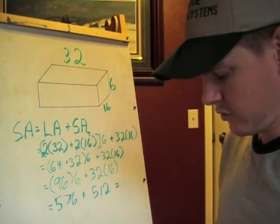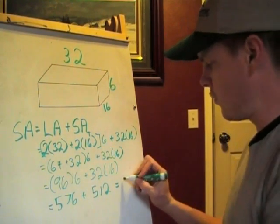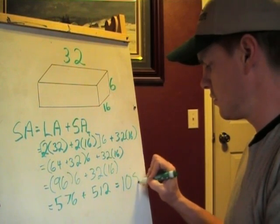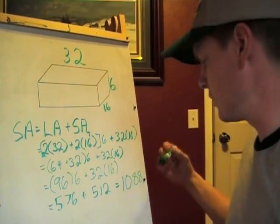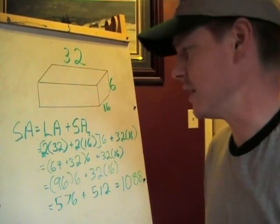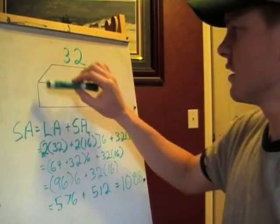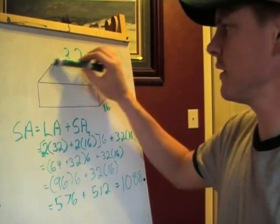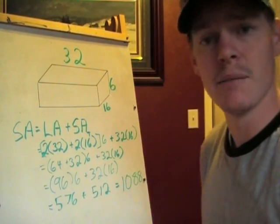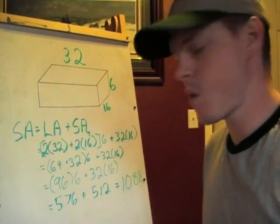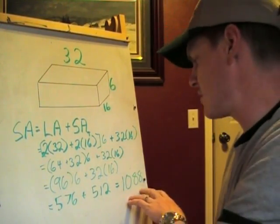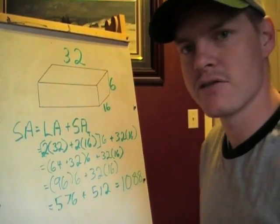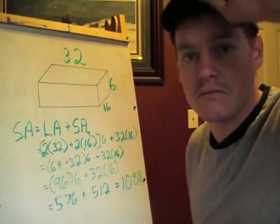And when we add those together, we get 1088. I don't know if you can see that very clearly, but 1088 square feet. So, we've discovered the lateral surface area, and then also the surface area of the top. So, if I want to get enough chicken wire, I'm going to have to get more than 1088 square feet of chicken wire.